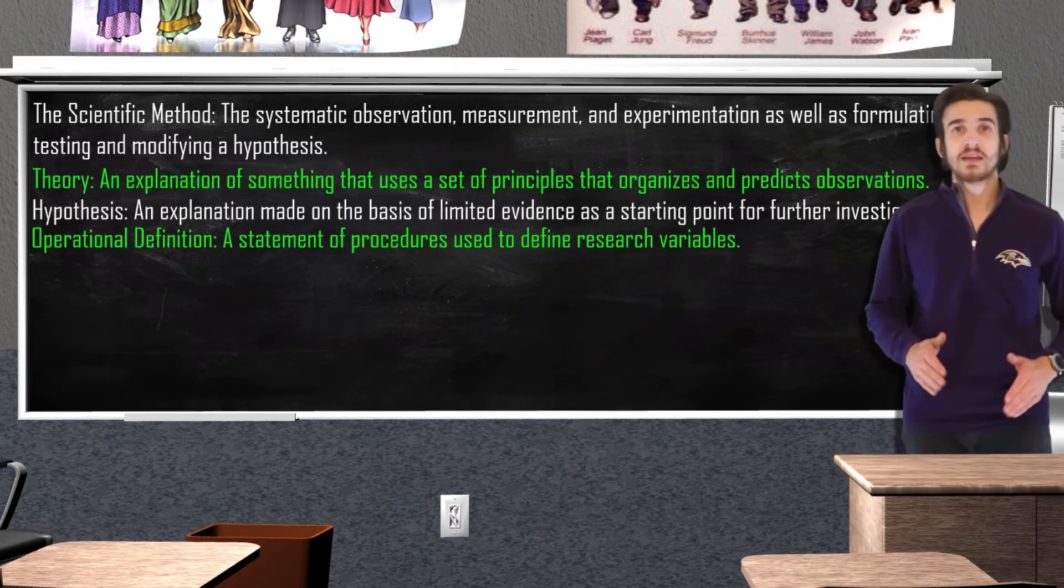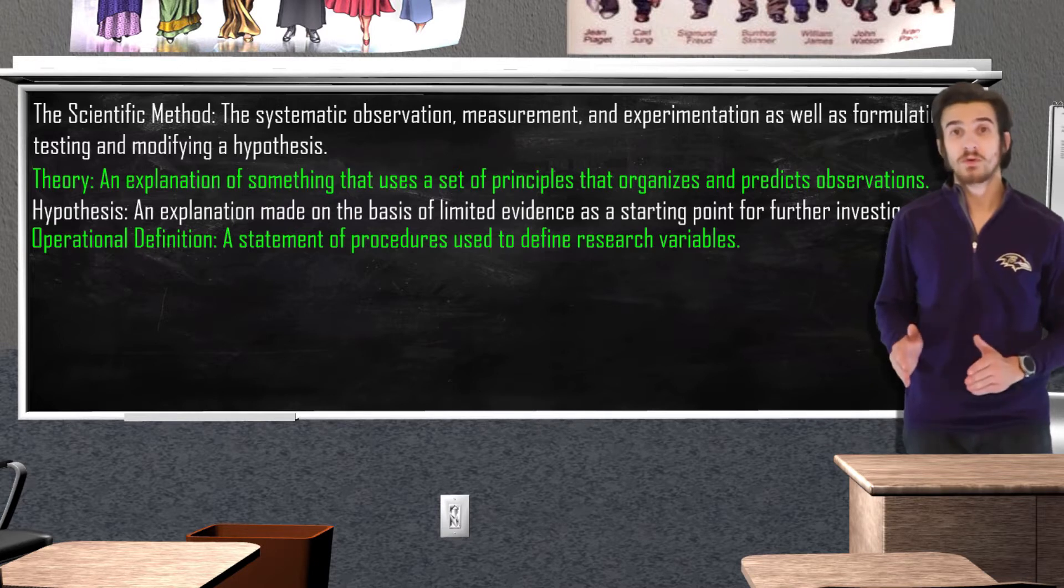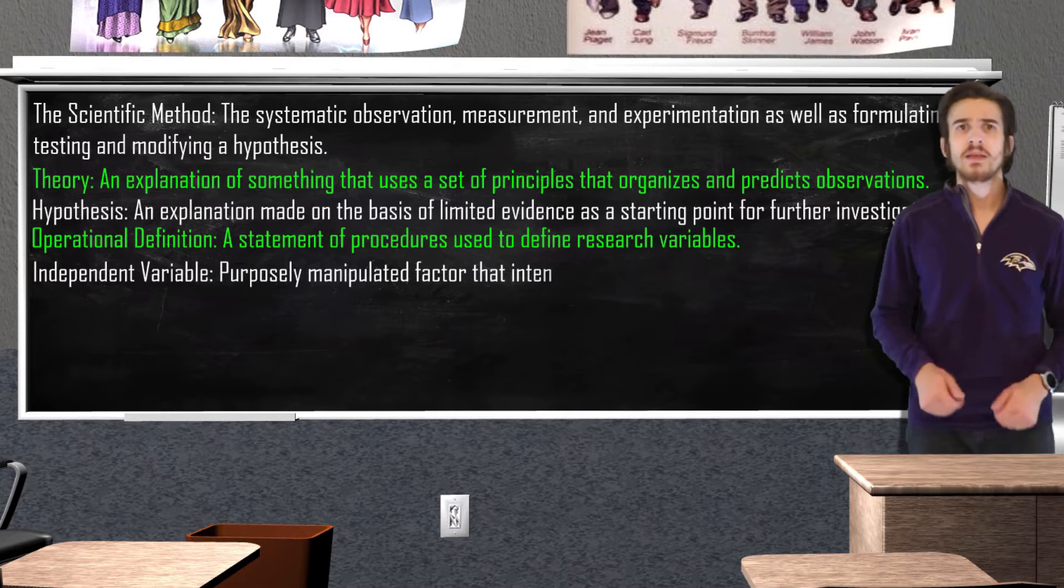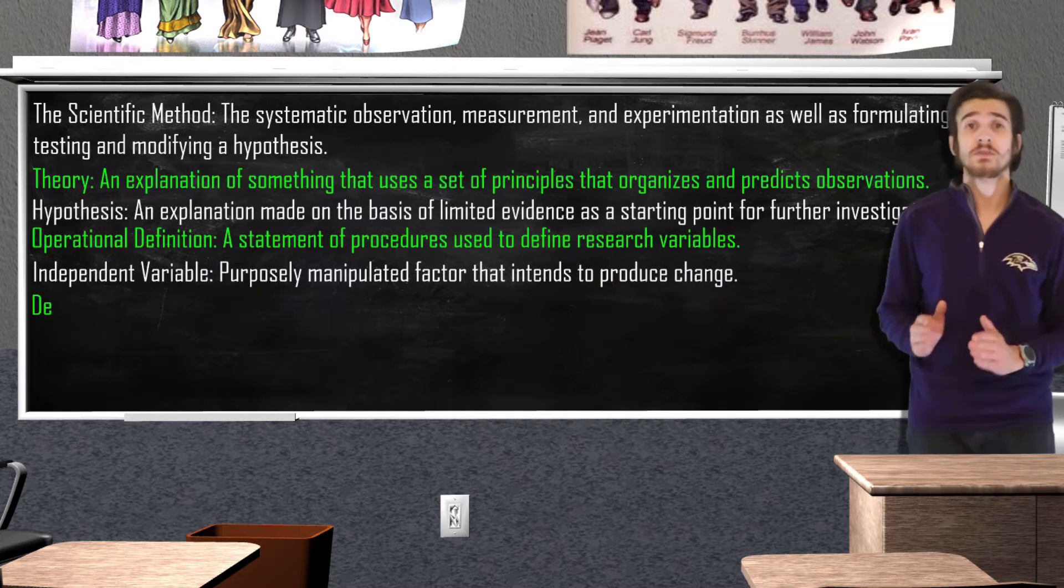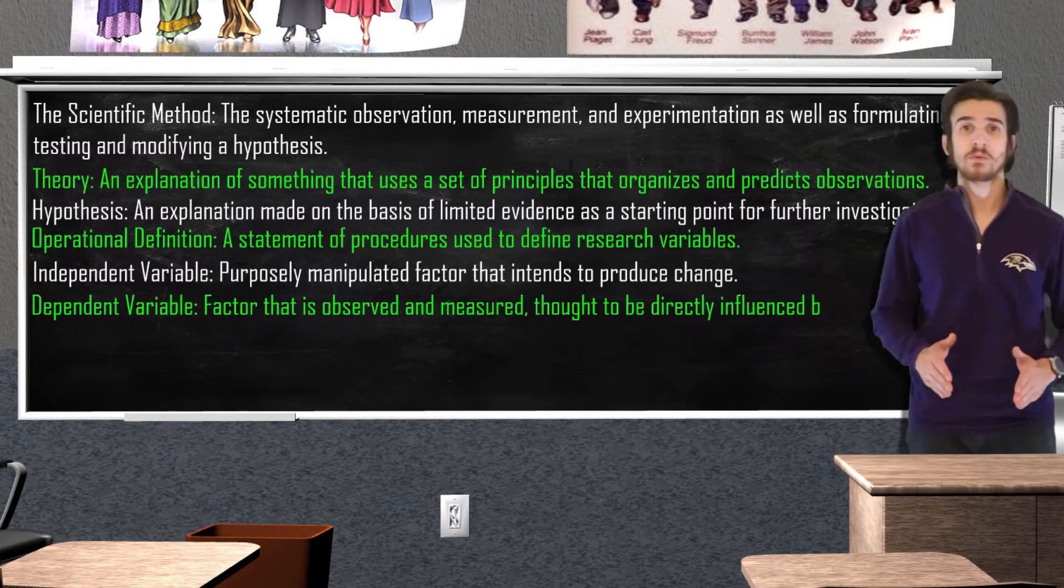In experimental research, psychologists manipulate variables in order to observe a change in another variable. The independent variable is purposely manipulated by the experimenter and is intended to produce a change. Our dependent variable is the variable that we are measuring.